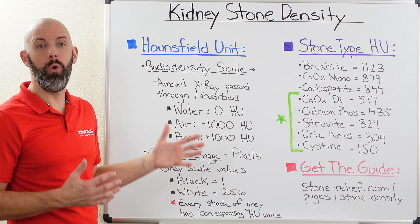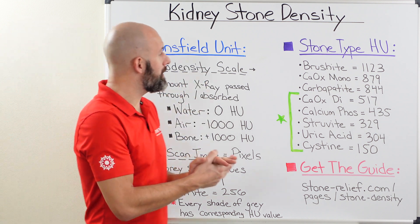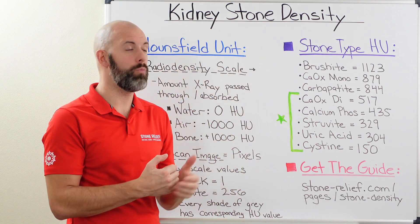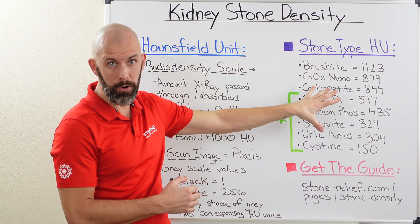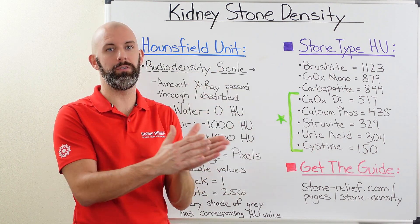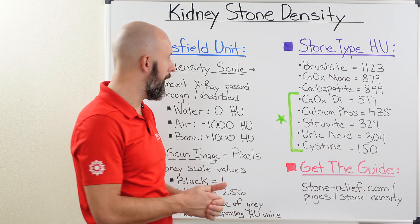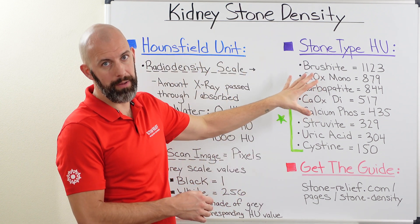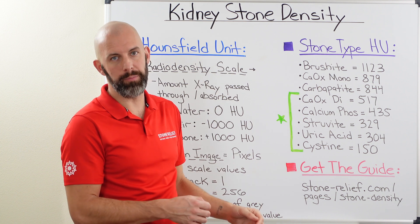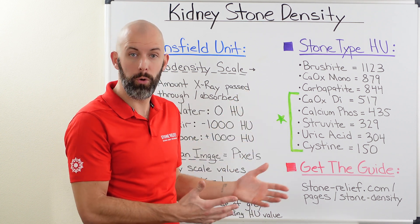What does this mean for us when it comes to the different types of kidney stones we form? Let's look at some different kidney stone types listed by Hounsfield unit. If we know the density, we understand the type of kidney stone, and that type will dictate what the correct treatment should be. This is not all possible stone types, but we're covering approximately 95 to 99% of kidney stones formed in the United States — so chances are your stone falls into this window or is a mix.